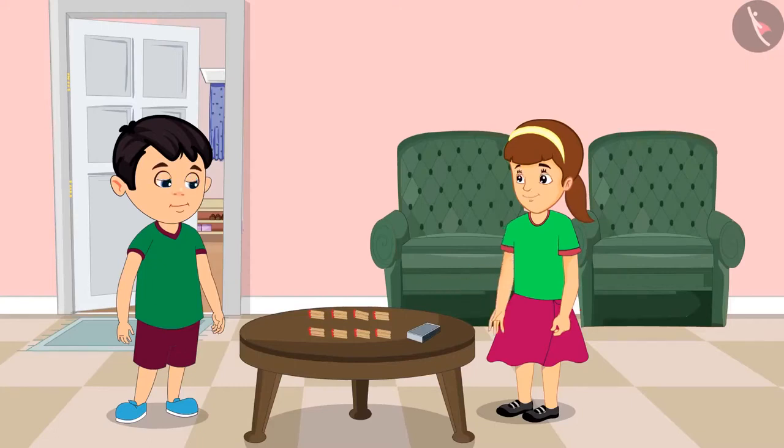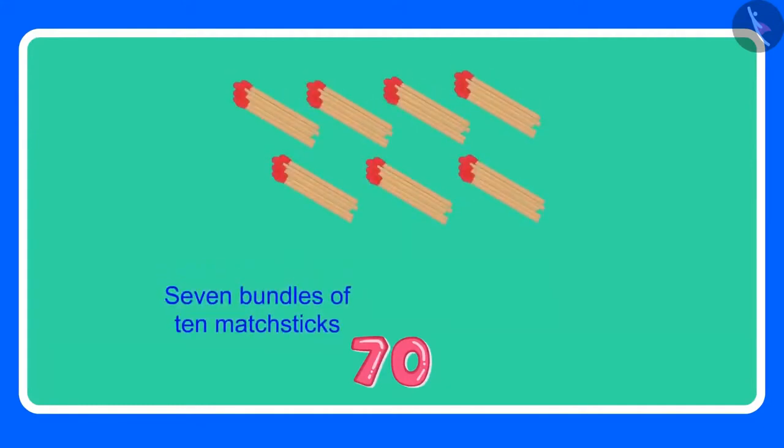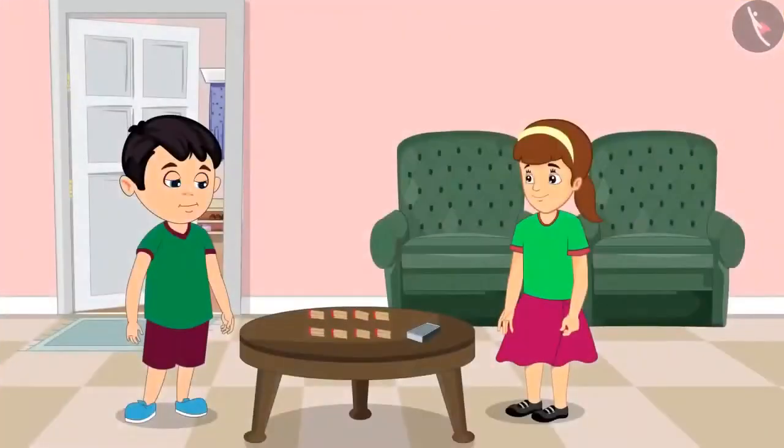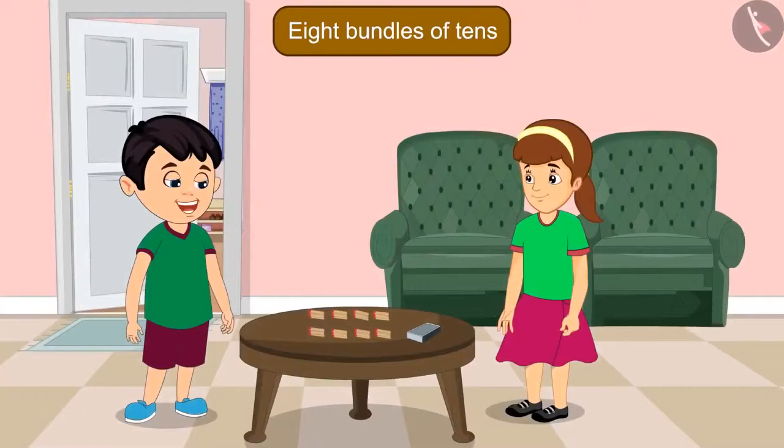Oh, Chotu. How many bundles have you made? Arti, for 70 we needed 7 bundles and 70 has a 0 also, which means 10 more matchsticks. Therefore, I have made 8 bundles of 10 matchsticks. You are not doing this correctly, Chotu. Wait, let me explain.